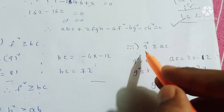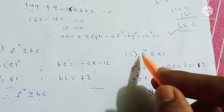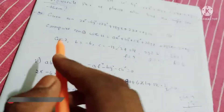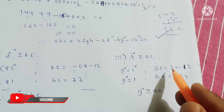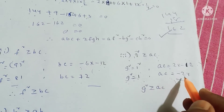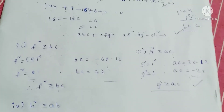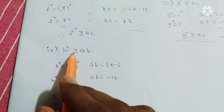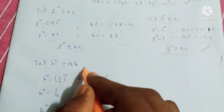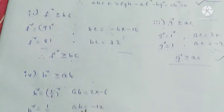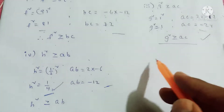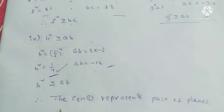Third condition: g squared is greater than or equal to ac. g equals 1, g squared equals 1. ac equals 2 times minus 12 equals minus 24. Since 1 is greater than or equal to minus 24, the condition is satisfied. Fourth condition: h squared is greater than or equal to ab. h squared equals 1 by 4. ab equals 2 times minus 6 equals minus 12. Since 1 by 4 is greater than minus 12, all conditions are satisfied, so the equation represents a pair of planes.